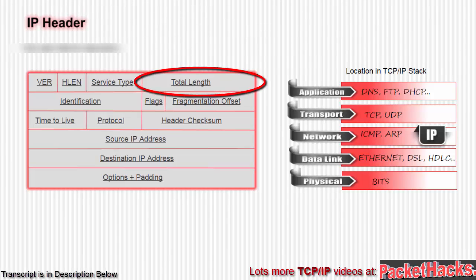The next field is the total length. This is the total length of the IP datagram in bytes, including the header and the data. 16 bits allows for a total length of 65,535.